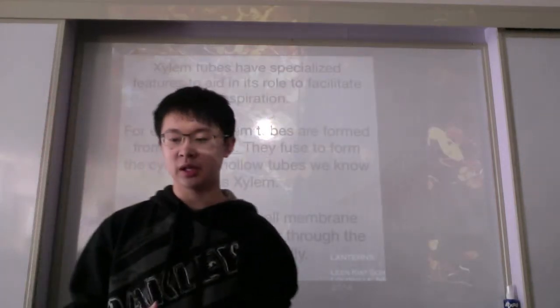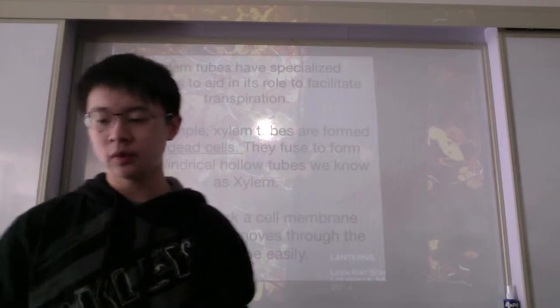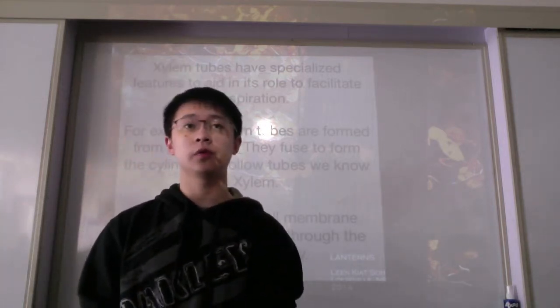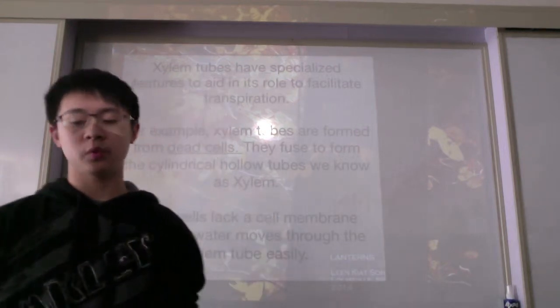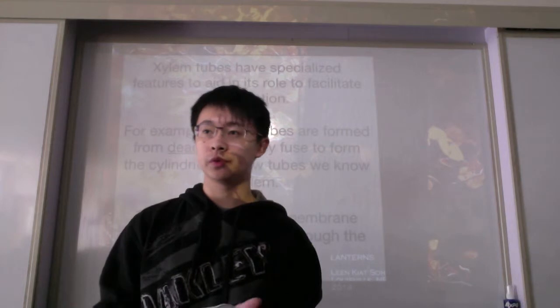Xylem tubes have specialized features to aid in its role to facilitate transpiration. For example, xylem tubes are formed from dead cells. They fuse to form the cylindrical hollow tubes we know as xylem. Dead cells lack a cell membrane, therefore water moves through the plant easily.